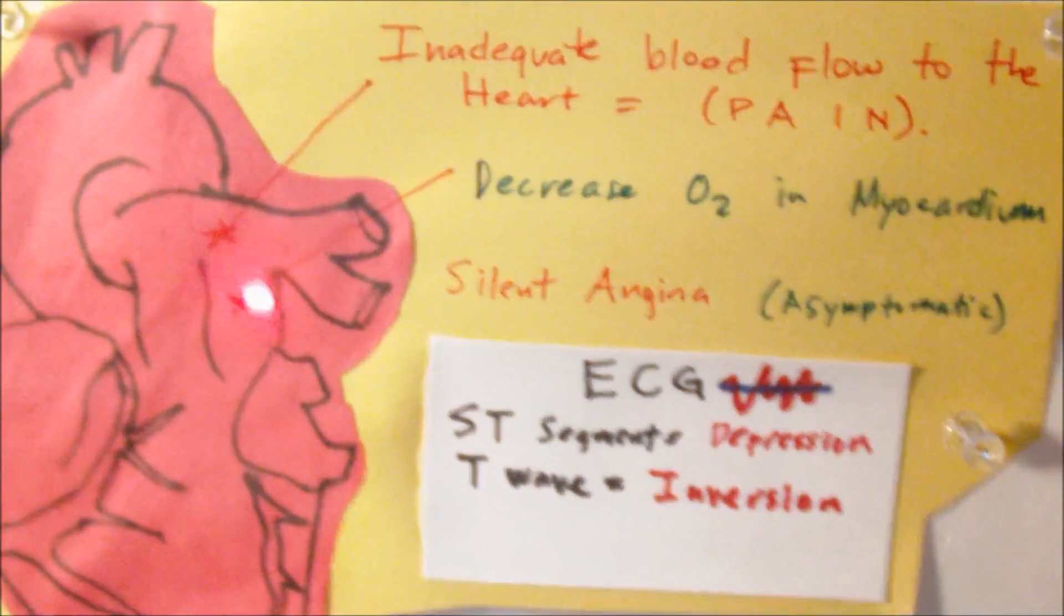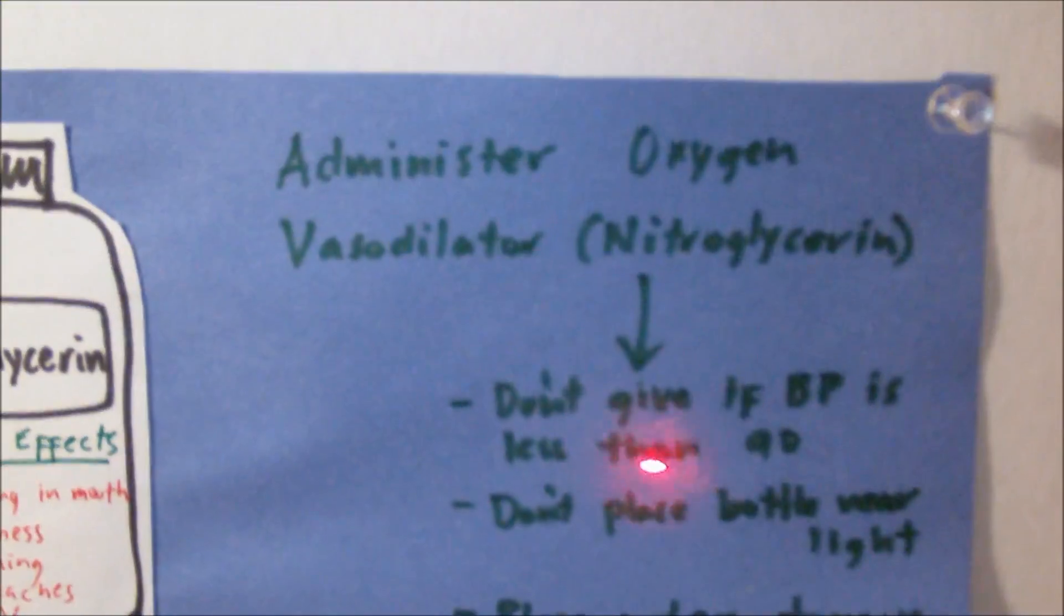So what can we do for a patient with angina? We could administer oxygen 4 to 6 liters as prescribed or as ordered.